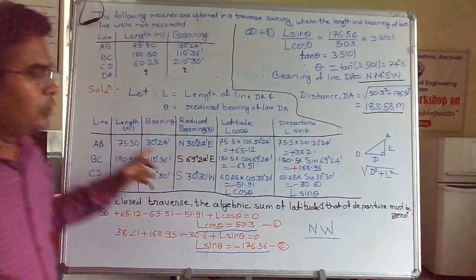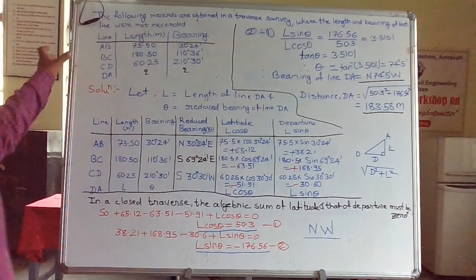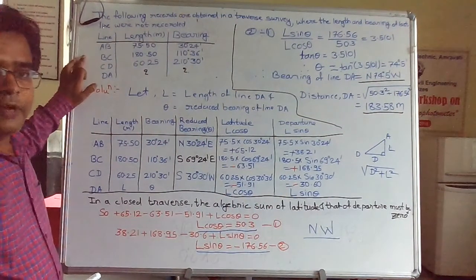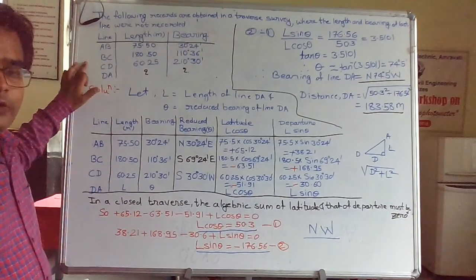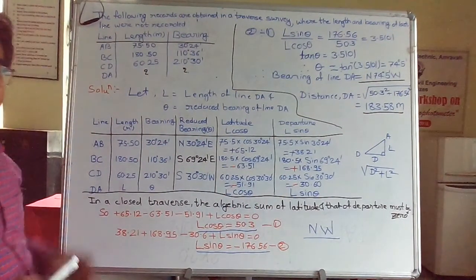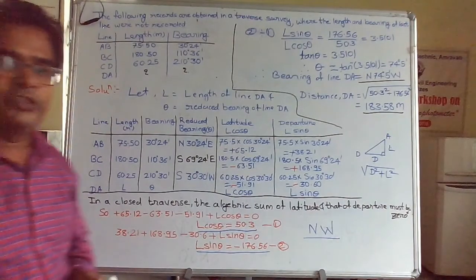To summarize, when solving a missing entry problem: first convert whole circle bearing to reduced bearing; then calculate latitude and departure for each line; apply the closed traverse condition that summation of latitudes equals zero and summation of departures equals zero; divide the two resulting equations to get tan θ and find the angle; then use the Pythagorean theorem — under root of latitude squared plus departure squared — to get the length of the missing line.